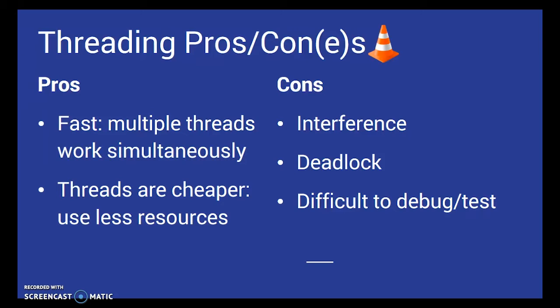Another con is deadlock. You can have a lock where two threads cannot work on the same line at the same time, and this can lead to a thread waiting for another thread. Basically, they wait forever, and they become locked, hence the term deadlock. And another con, it can be really difficult to debug and test your code when multithreading.